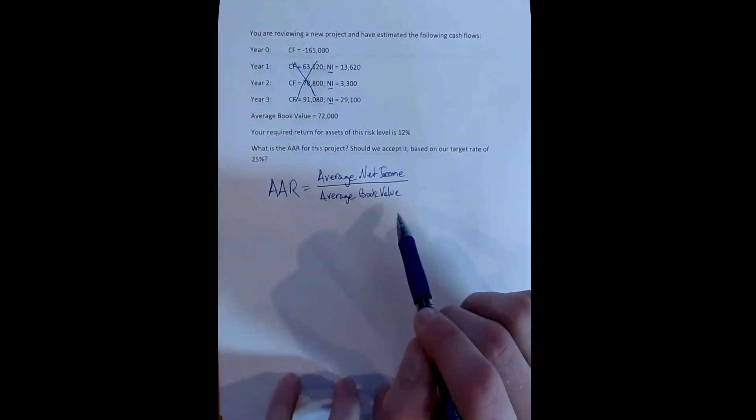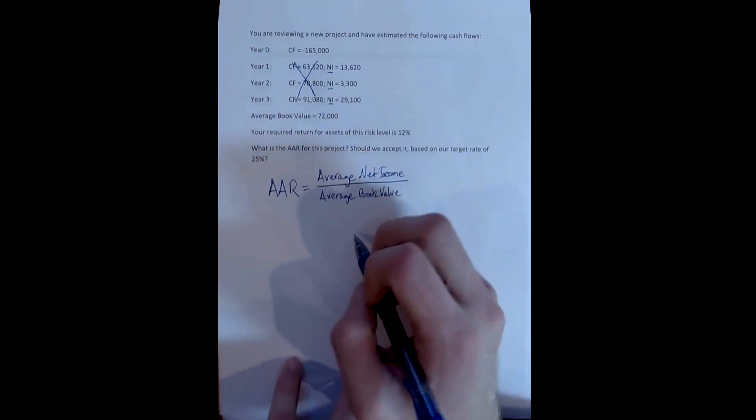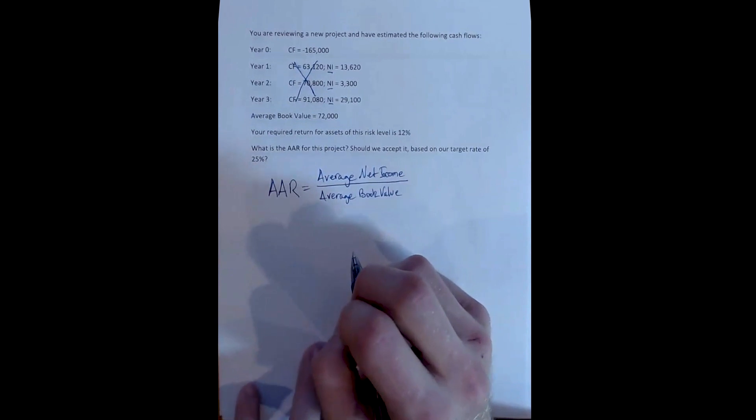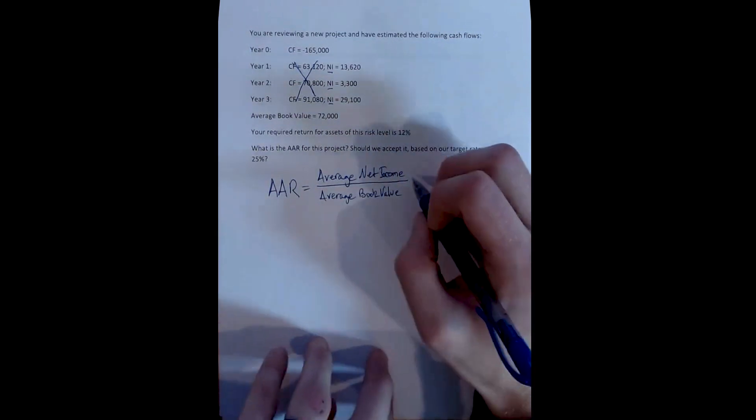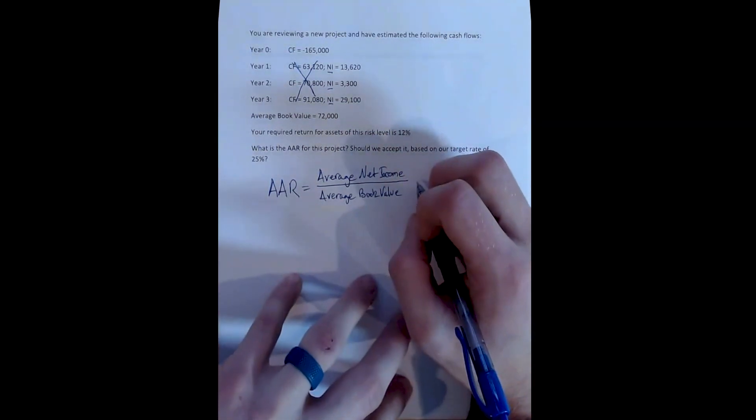So that's what's going into the Average Accounting Return. We can think about this as a project level analog of the return on assets, or the ROA.